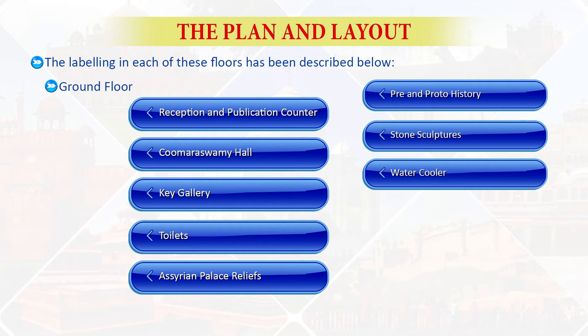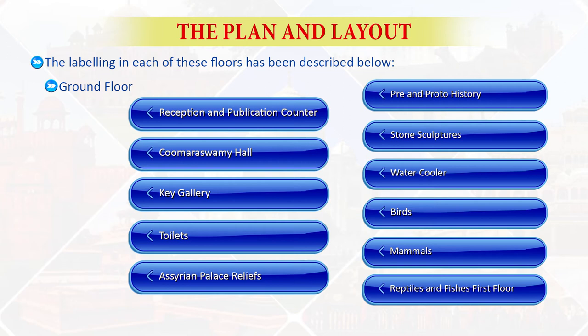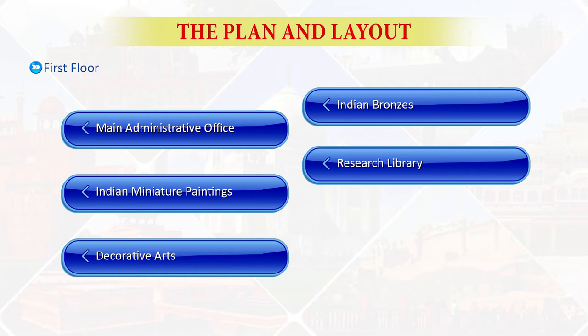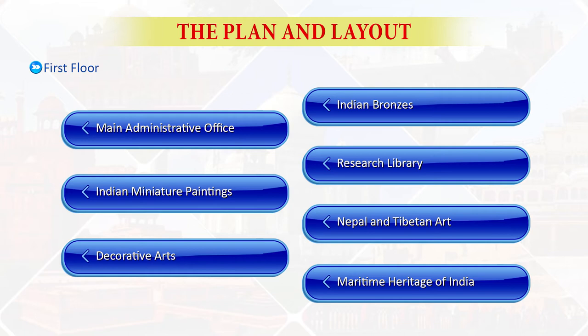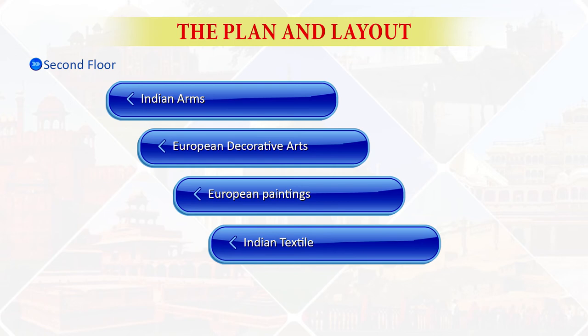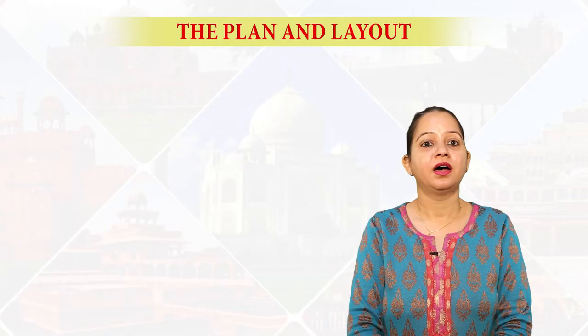The ground floor has the reception and publication counter, Kumarswamy Hall, key gallery, toilets, Airan Palace reliefs, pre- and proto-history, stone sculptures, water coolers, birds, mammals, reptiles, and fishes. On the first floor: main administrative office, Indian miniature paintings, decorative arts, Indian bronzes, research library, Nepal and Tibetan art, and maritime heritage of India. On the second floor: Indian arms, European decorative arts, European paintings, Indian textile, and Far Eastern art.